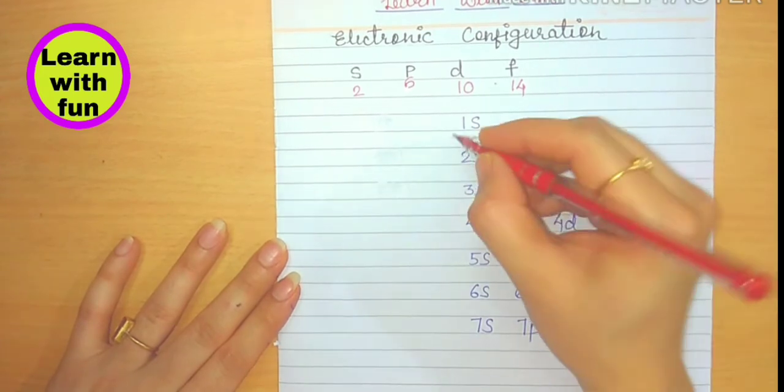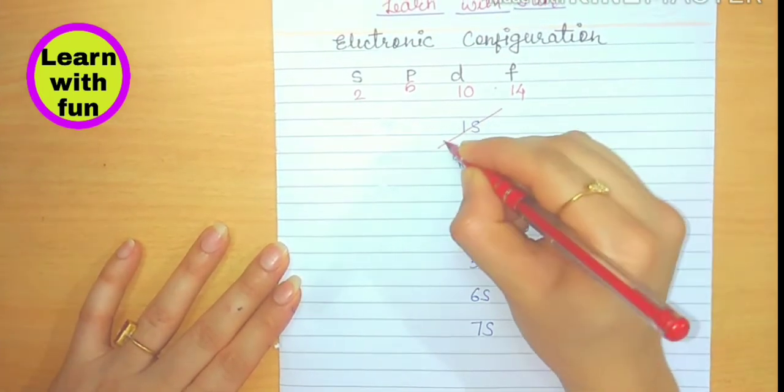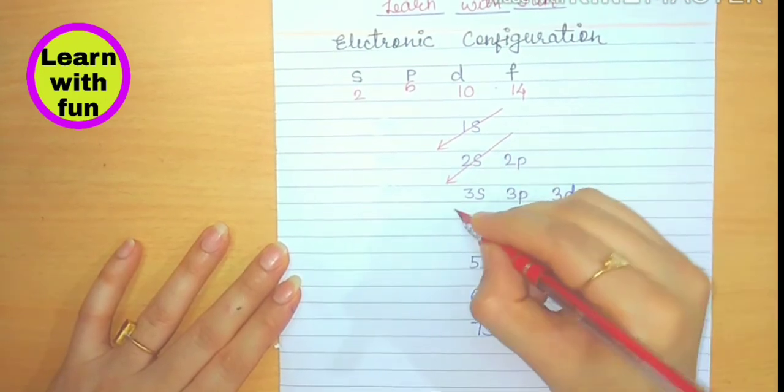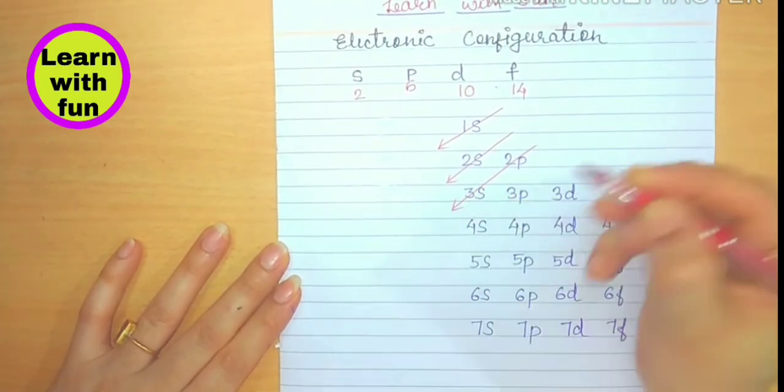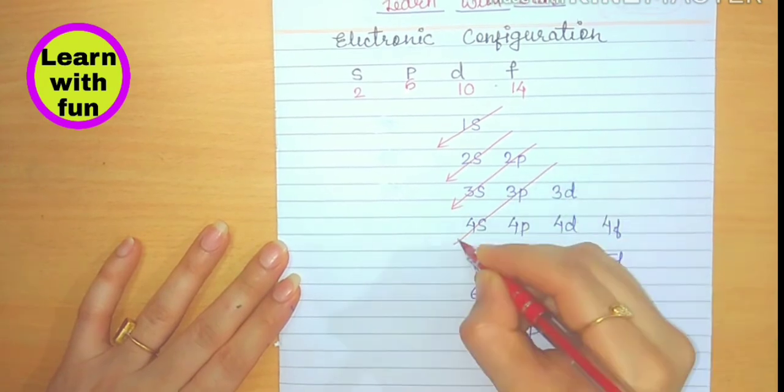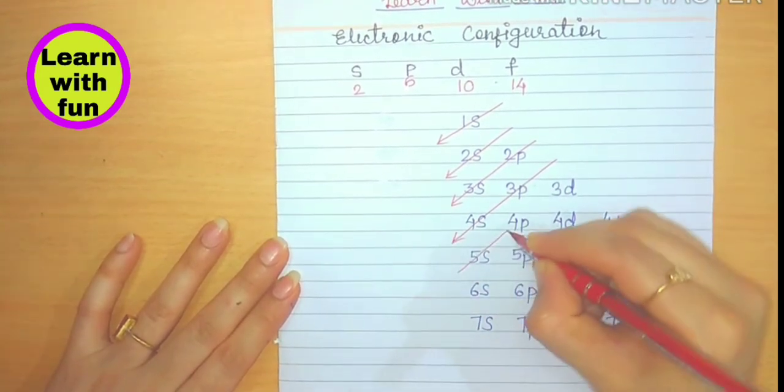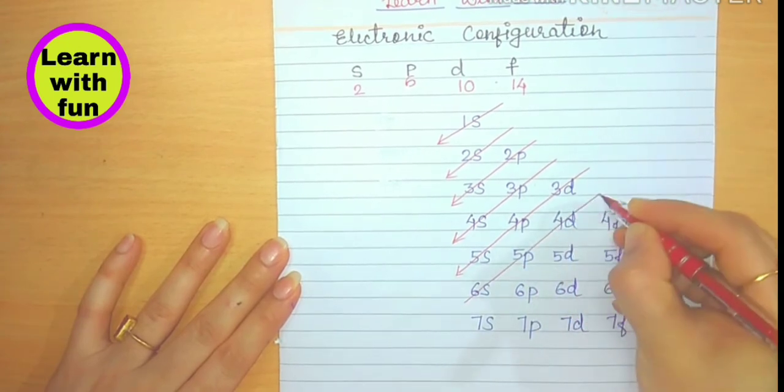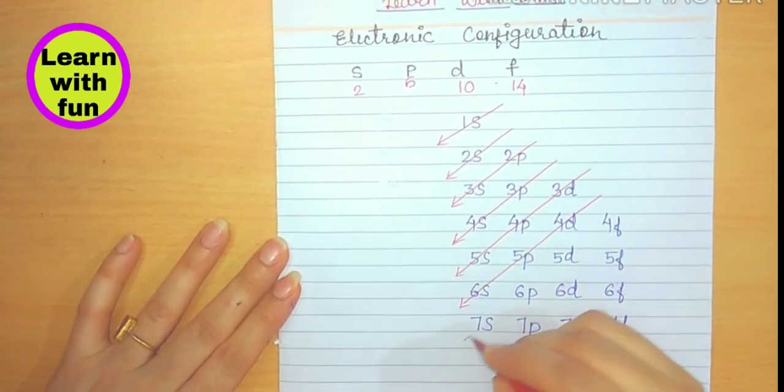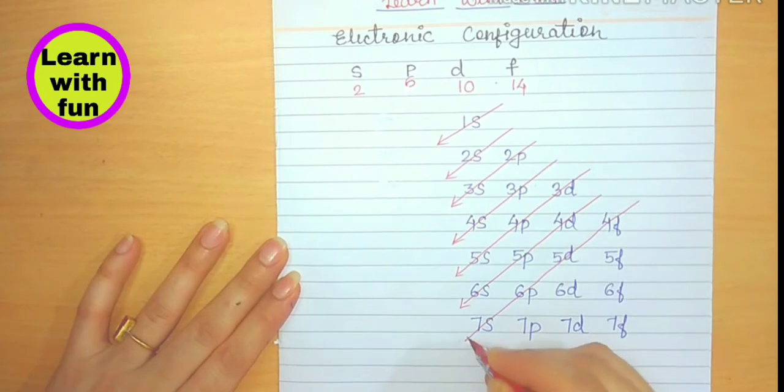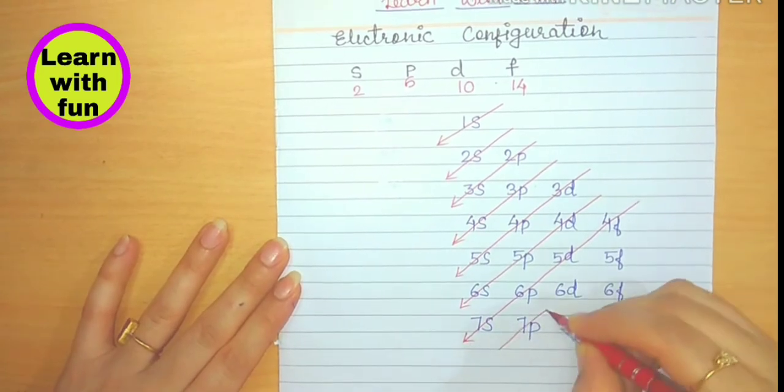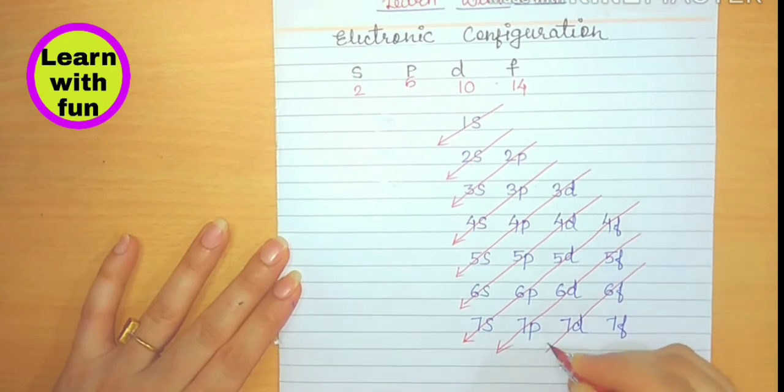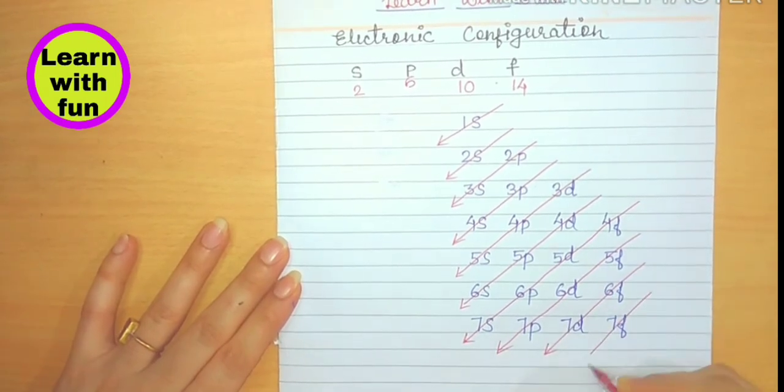So let's make a diagonal method. This is 1S, 2S, 2P. This way, we will just make a diagonal. This way. And the last one, 7F.